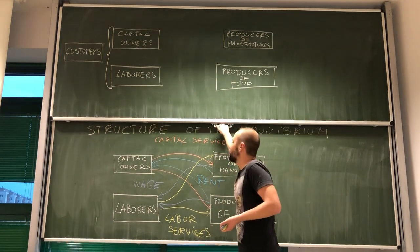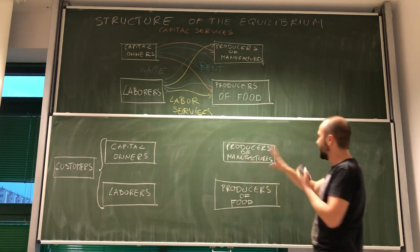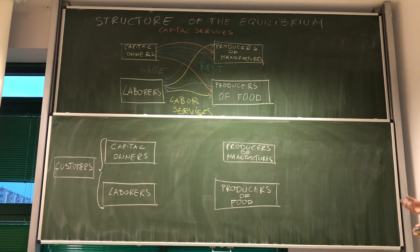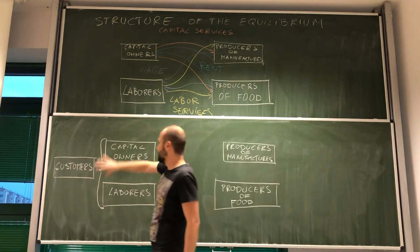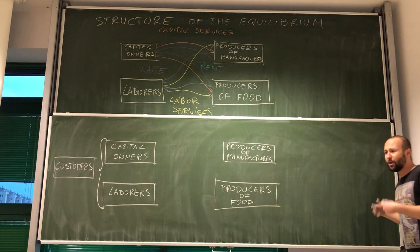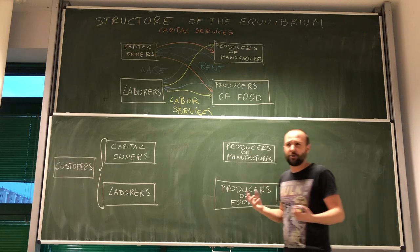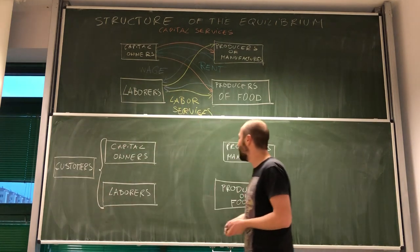But this is, of course, not the only type of relationship that those two types of agents are getting into. Because, for now, we are assuming that there is no government, there is no savings, and all other things that could just cloud our analysis.